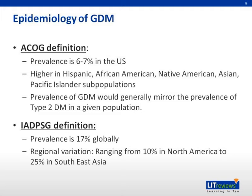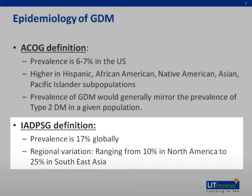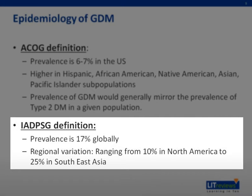Given the difference in diagnostic criteria by different societies, the prevalence of GDM depends on the definition used. Using the ACOG definition, the prevalence is about six to seven percent, higher in certain ethnic groups, and generally mirrors type 2 diabetes. The International Association of Diabetes and Pregnancy Study Group definition is broader, so the prevalence is actually higher globally.